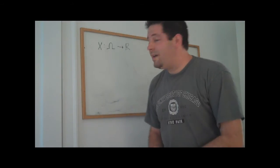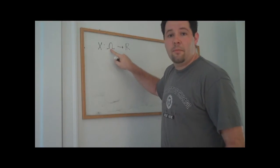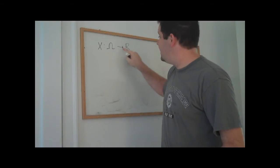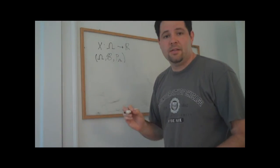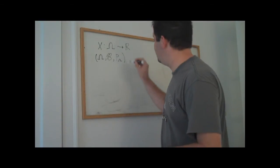So in math speak, x is a random variable if it takes elements from our sample space, our original sample space, and takes them into the real numbers. This probability space actually gets induced into a related probability space that we can actually work with.